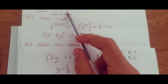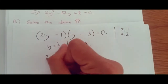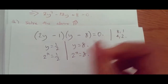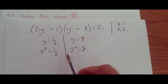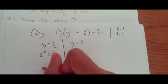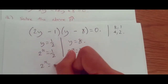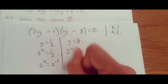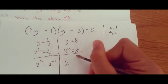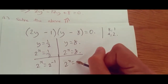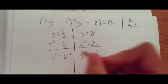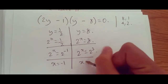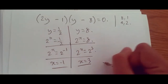Recall that y equals 2 to the power of x. So this means 2 to the power of x equals 1 half, and 2 to the power of x equals 8. Rewriting in base 2: 1 half is 2 to the power of negative 1, and 8 is 2 cubed. Hence x equals negative 1, and x equals 3. Done.